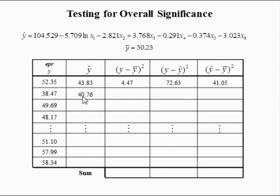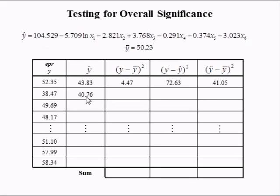Again, we plugged in the second observation of the transformed x1, x2, x3, x4, x5, x6, did the arithmetic, and got 40.76.